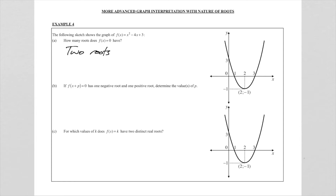The next question says: if f(x + p) = 0 has one negative root and one positive root, determine the values of p. At this point, if you look at the parabola, both roots or x-intercepts are positive. The question wants one negative root and one positive root. The f(x + p) notation refers to a horizontal shift, so we need to shift this parabola horizontally to the left so that the x-intercept at x = 1 moves to the negative side.